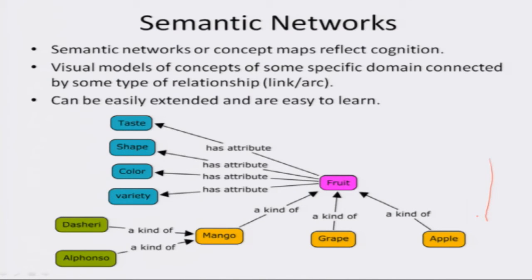The rectangles denote the concepts and the arrows denote the relationships. For example: Sherry is a kind of mango, Alfonso is a kind of mango, mango is a kind of fruit, grape is a kind of fruit, apple is a kind of fruit. Fruit has attributes: taste, shape, color, and variety.